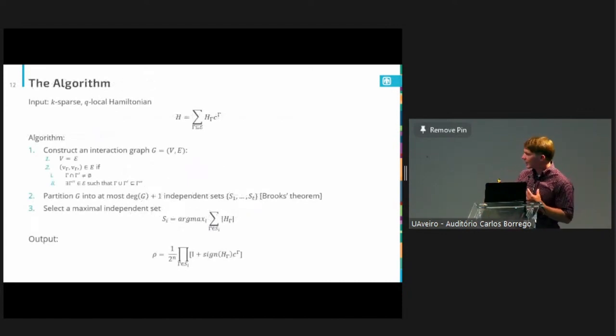We have four independent sets, and then we have some singleton independent sets. Once you have your graph partitioned into independent sets, you're going to select a maximal independent set. Maximal here isn't just the largest independent set. Maximal actually means it sort of carries the most weight in your Hamiltonian, and I'll put down the actual condition in a little bit. But once you find this maximal independent set, you're going to use it to construct your output state. The state that you construct from your maximal set is defined as follows. It's a normalized sum of the product over all the gammas in your independent set of the identity plus the sign of H sub gamma times C to the gamma.